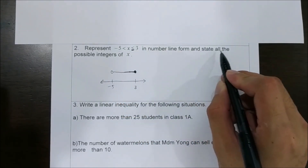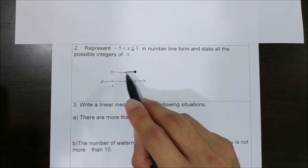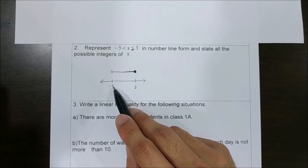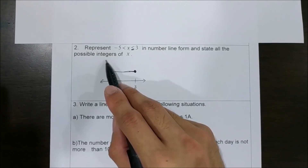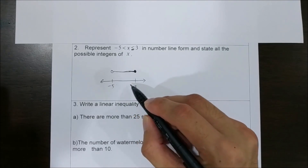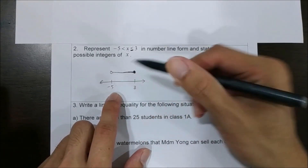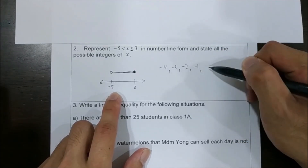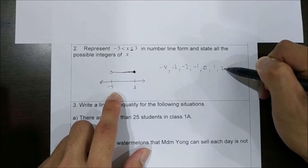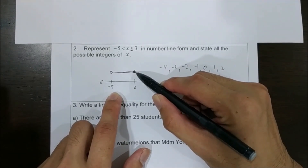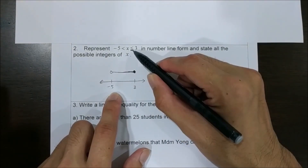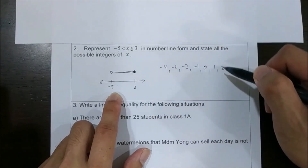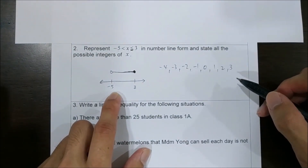Now state all the possible integers of x. This line represents all possible values of x, which is between negative 5 and 3. We only want integers, so we have negative 4, negative 3, negative 2, negative 1, 0, 1, 2. And because this is a solid dot, this symbol denotes that x can be equal to 3, so x can be 3 as well.